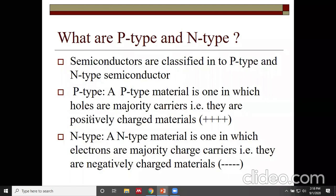That vacancy will shift from one point to another, attracting neighboring electrons, and is called a hole. The number of holes created is exactly equal to the number of impurity atoms added. For example, if you put a thousand aluminum atoms in the crystal, that creates a thousand holes available for conduction. That is why holes are majority charge carriers in P-type semiconductors.